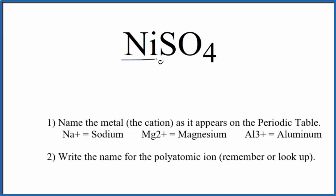First, we'll write the name of the metal—that's nickel. And then we write the name of the polyatomic ion. We said this SO4 is the sulfate ion. So far, the name we have is nickel sulfate for NiSO4.